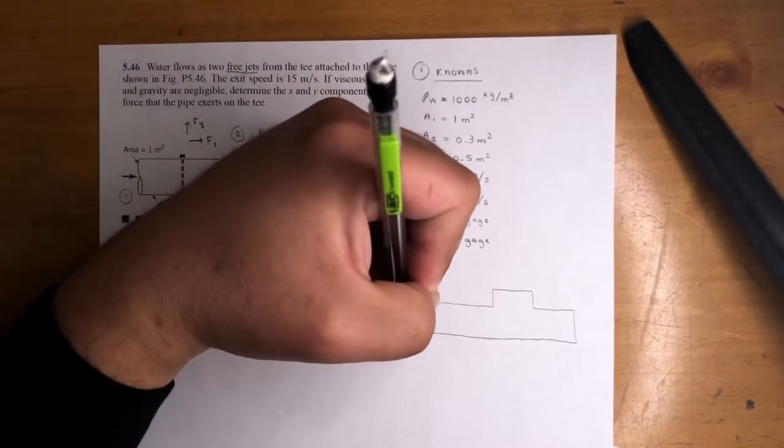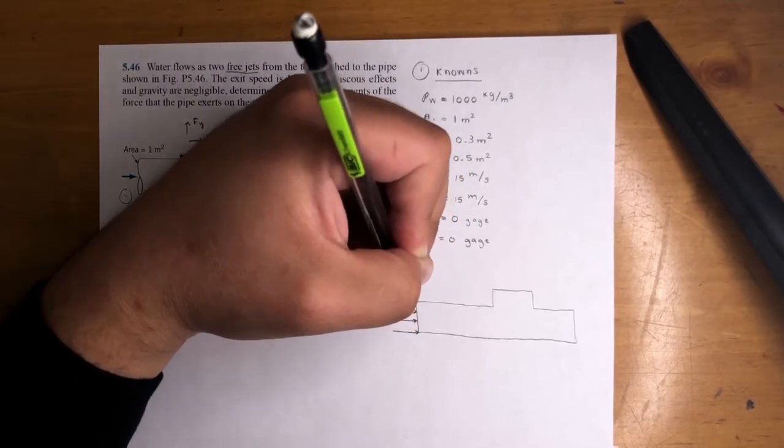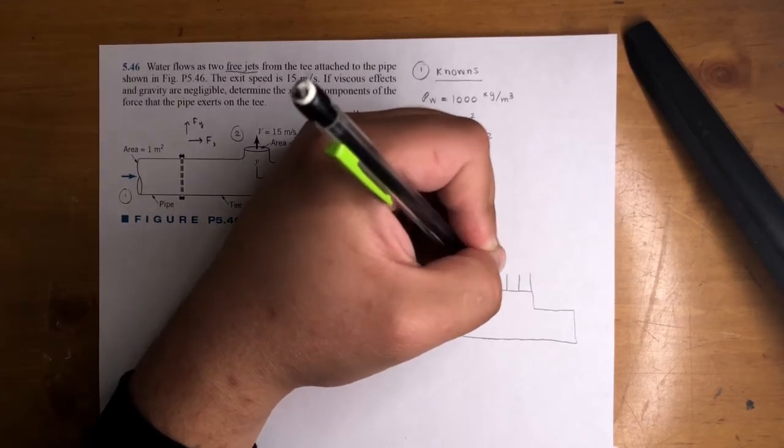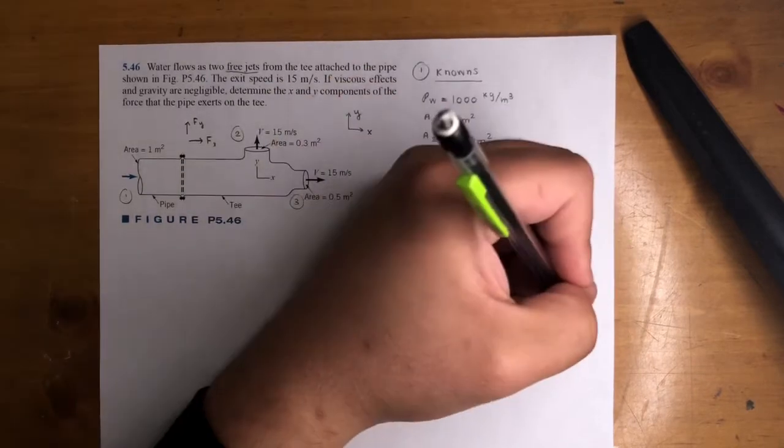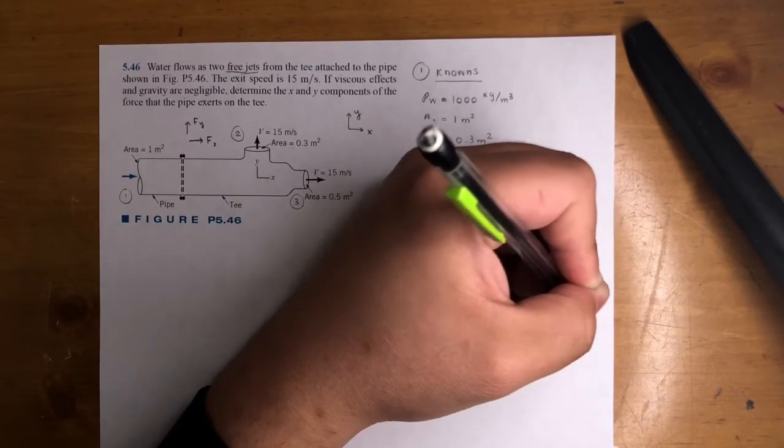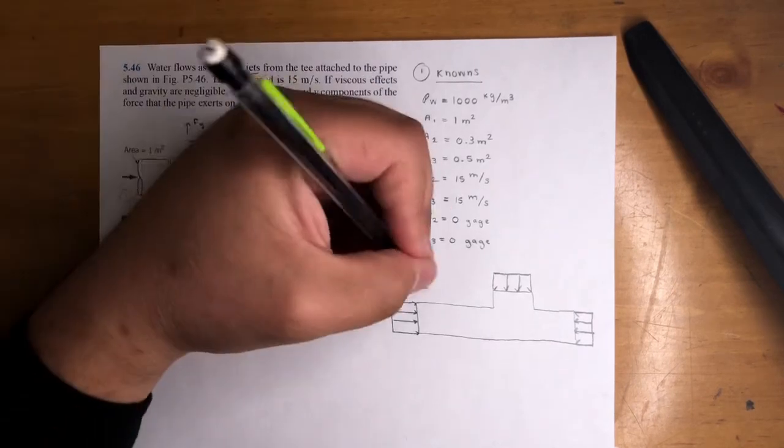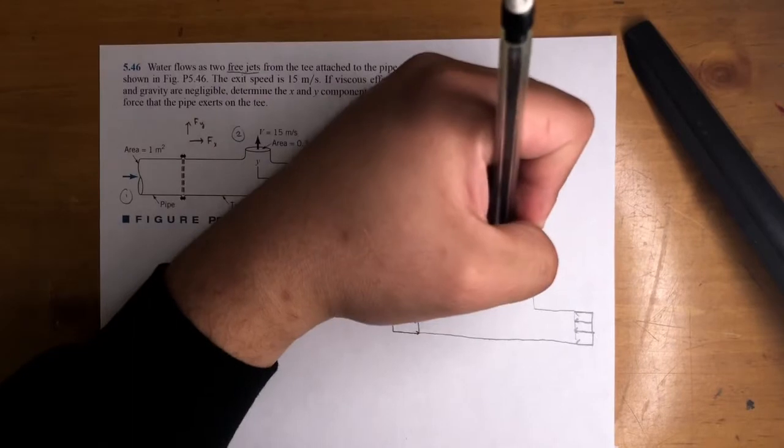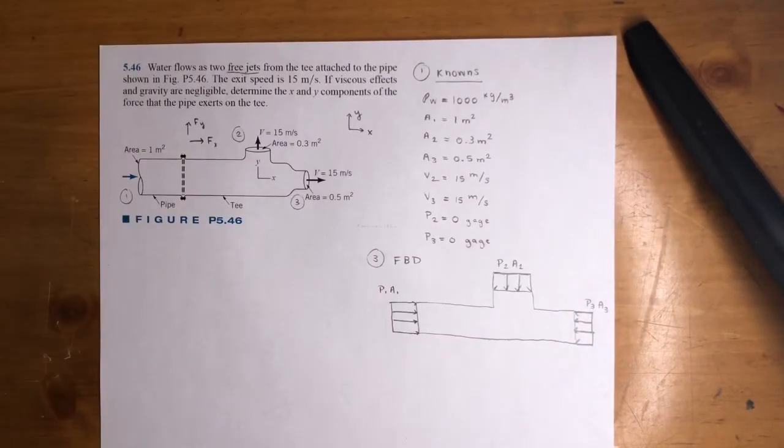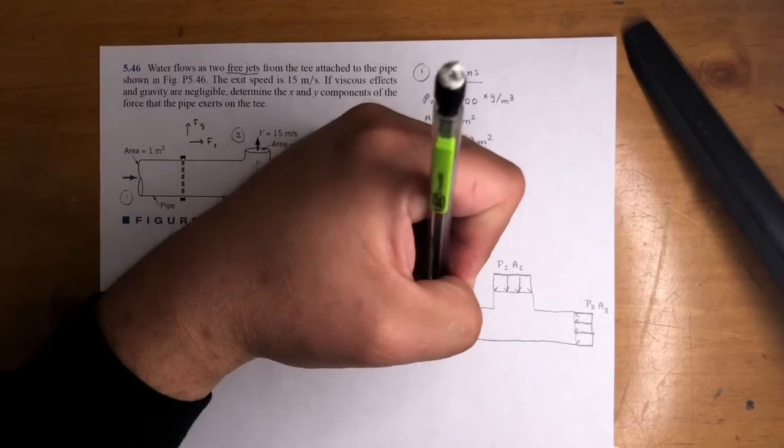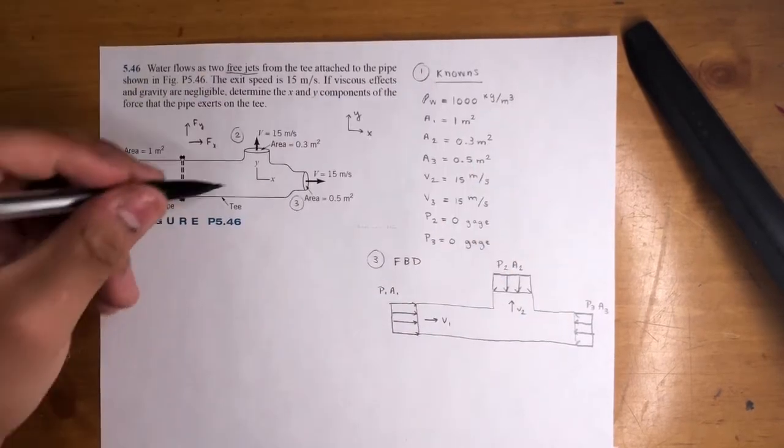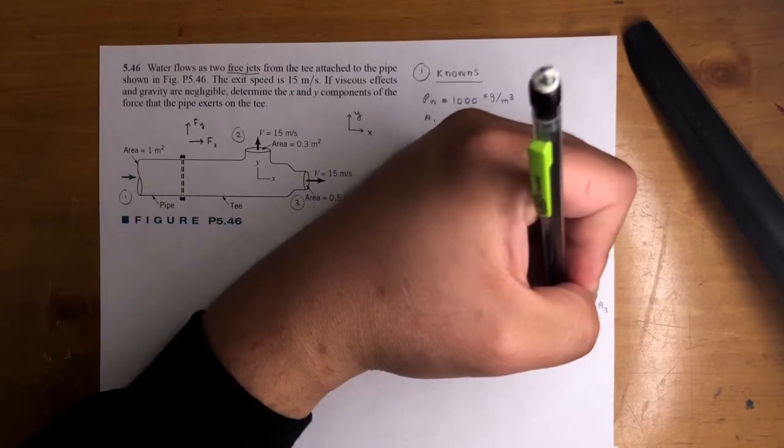We've got pressure acting at the inlet right here. We got another pressure acting at the outlet here. We got pressure at this outlet. So let's label that: P1A1, P2A2, P3A3. For the flow rates, velocity is traveling in this direction, velocity is traveling up this way at the outlet, and it's going this way here at point 3.